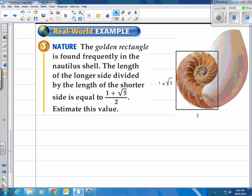All right let's take a look at this last example. It says the golden rectangle is found frequently in the nautilus shell. The length of the longer side divided by the length of the shorter side is equal to 1 plus the square root of 5 all over 2 or divide by 2. Estimate this value. They have a picture over there that shows you the sides.